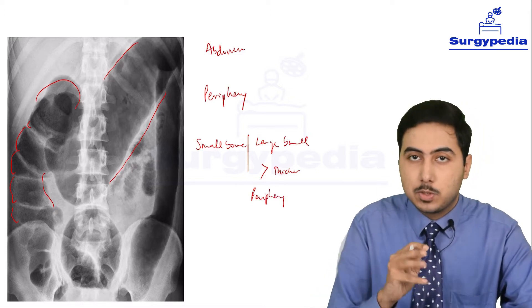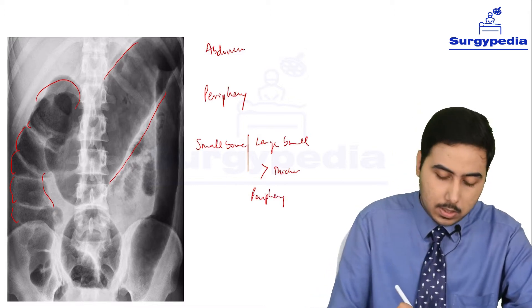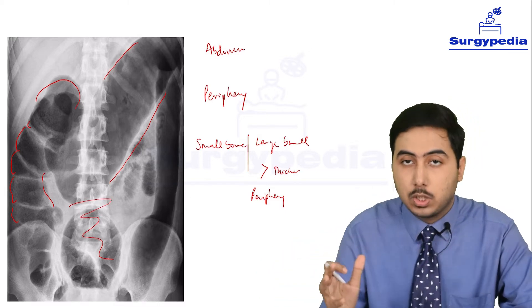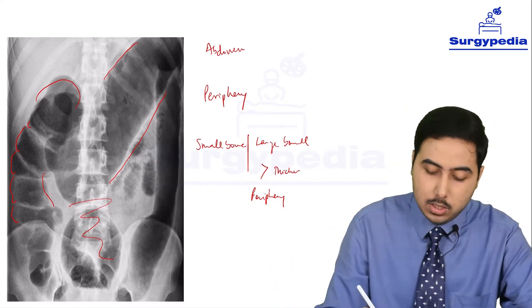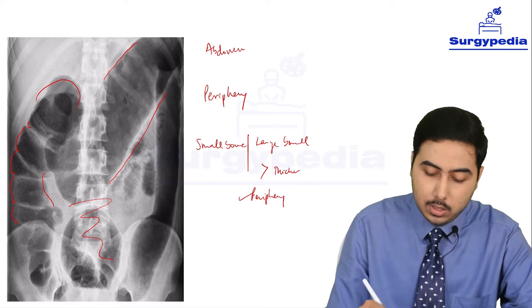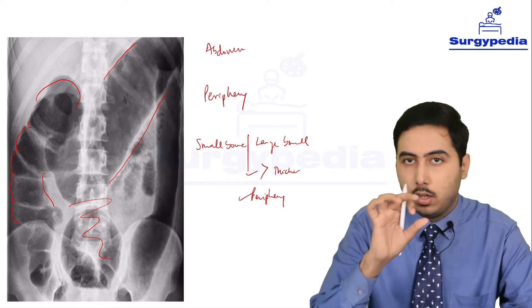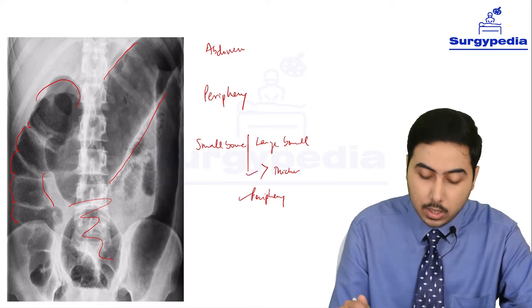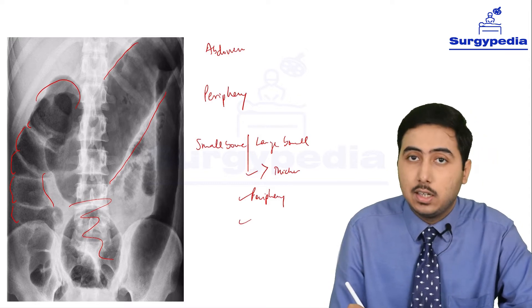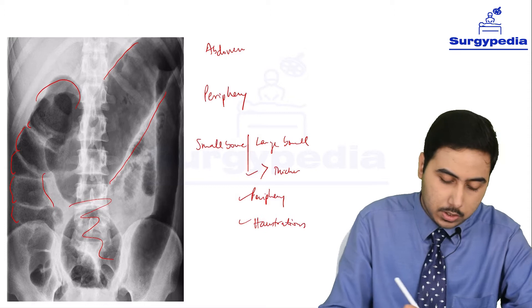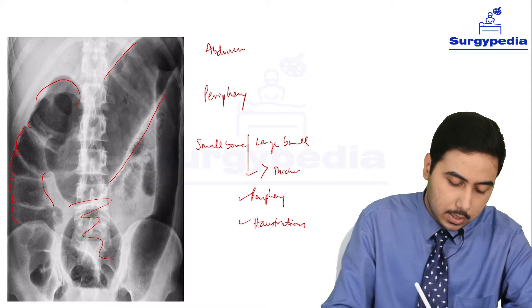Small intestinal obstruction would present in the center, but large bowel obstruction presents along the periphery. That is another point, and that is matching with our finding. Thick diameter is also matching with our finding. Another finding we have discussed is haustra markings - we can observe the haustra markings here as well.